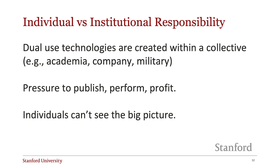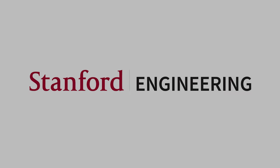This can be hard because dual-use technologies are not created in a vacuum. They are a product of a collective institution or organization such as a university, a company, or even the military. There is often immense pressure from these institutions for individuals to publish a research paper, generate a profit, or defend one's country. Additionally, institutions are often intentionally constructed so that individual workers are strictly limited to one component of the final product, meaning they don't get to see the bigger picture and it can be very hard to predict what kind of outcomes a piece of technology might have. Despite these challenges, it is still important to consider what possible dual uses might arise from a specific piece of technology when we are thinking about designing and developing it.